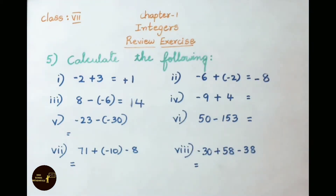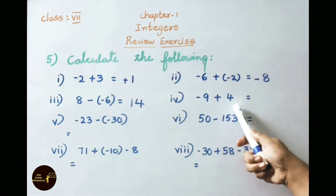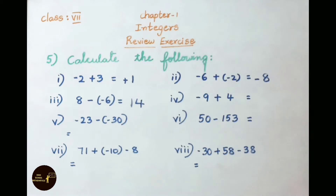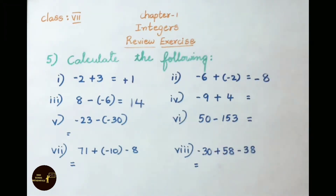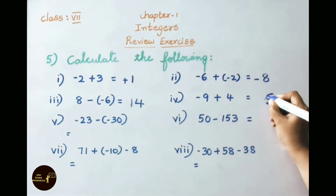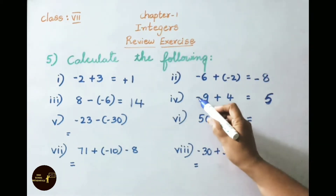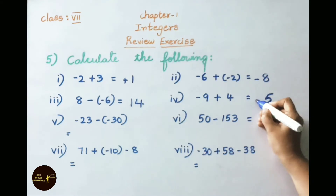See now the fourth sum: minus 9 plus 4. Opposite sign is there, so we have to do subtraction. 9 minus 4 equals 5. Here 9 is greatest and its sign is minus, so keep a minus sign. The answer is minus 5.